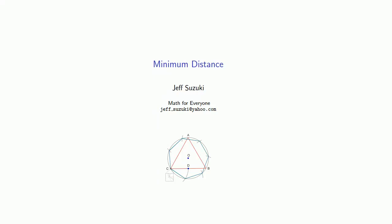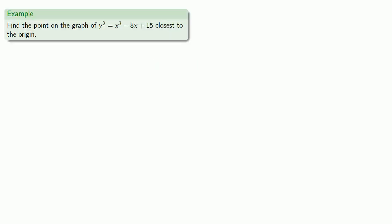Let's take a look at another optimization problem, the problem of finding the point on a curve closest to a given point. So let's say we want to find the point on the graph of y squared equals x cubed minus 8x plus 15 closest to the origin.